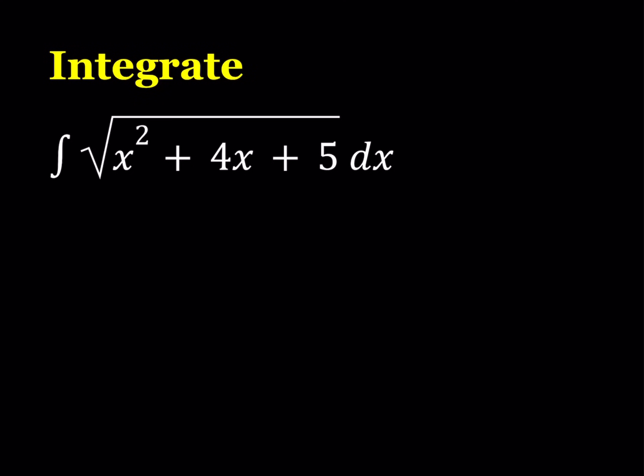Hello everyone. In this video we're going to be integrating a radical function: the square root of x squared plus 4x plus 5 dx. Some functions are easy to integrate, such as cosine x or e to the power x, because we know whose derivative will give us that function. But in cases like this one, it's not easy to guess the anti-derivative, so we have to use special methods — in particular, trigonometric substitution.